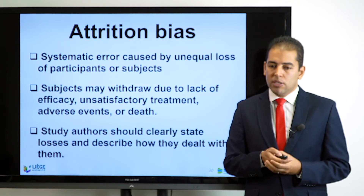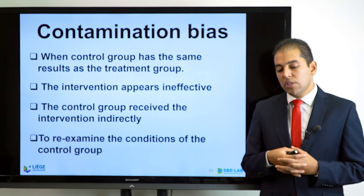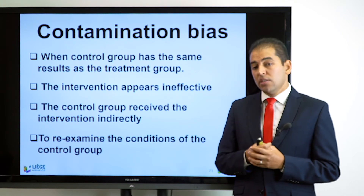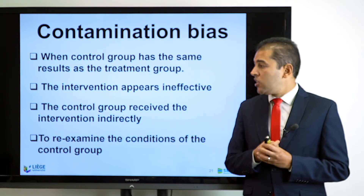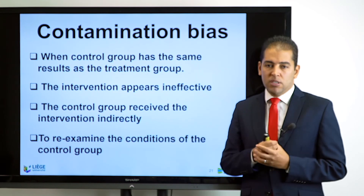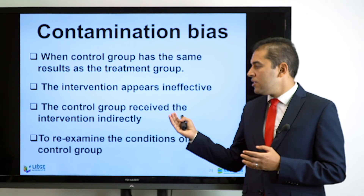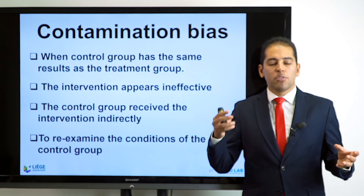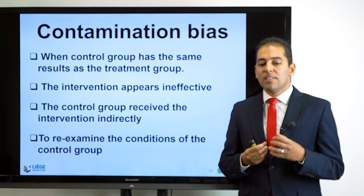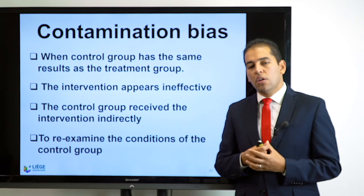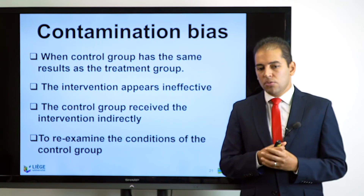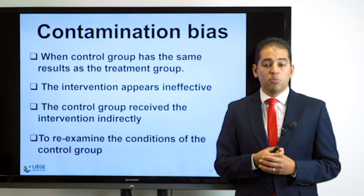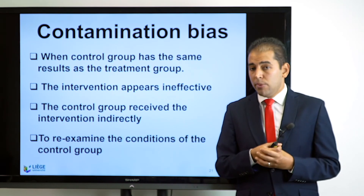Another type of bias to avoid is contamination bias, which occurs when a control group obtains the same results as the treatment group, making the intervention appear ineffective. This happens when the control group receives the intervention indirectly — for example, in long-term experimental research where the intervention reaches subjects without the researcher's control. You must therefore re-examine the condition of the control group throughout the experiment to ensure there is no contamination bias.